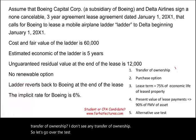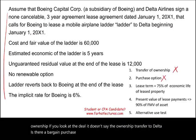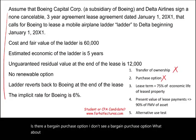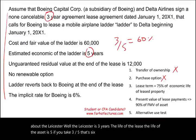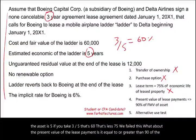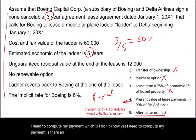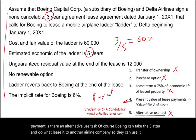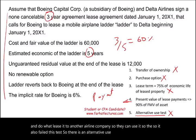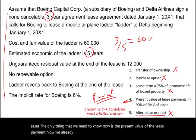No renewal option — the ladder reverts back to Boeing at the end of the lease. The implicit rate is 6%. Now let's check the tests: no transfer of ownership, no bargain purchase option. Lease term: 3 years divided by 5-year life = 60%, which is less than 75% — failed. Alternative use test: Boeing can re-lease this ladder to another airline — failed. We still need to compute the present value of the lease payments to check the 90% test.